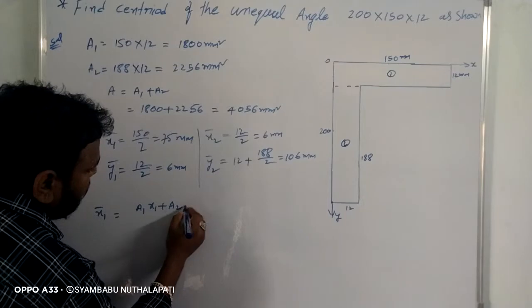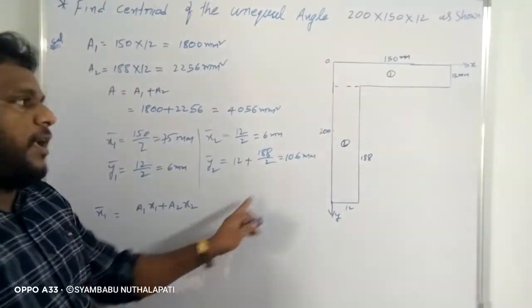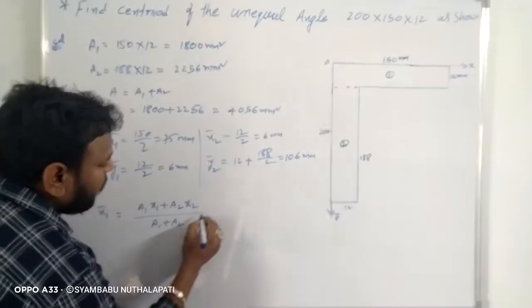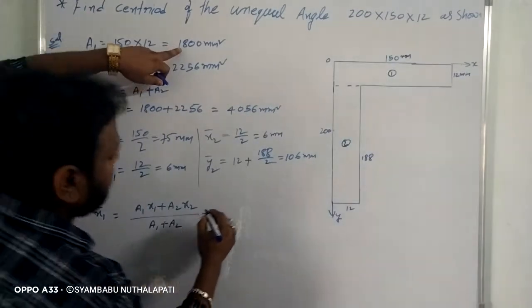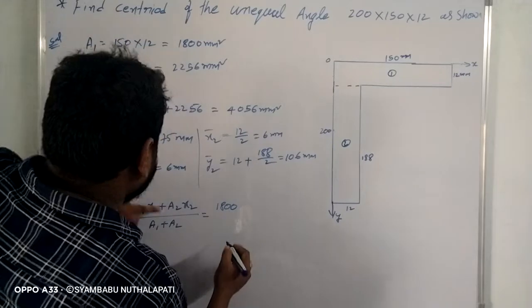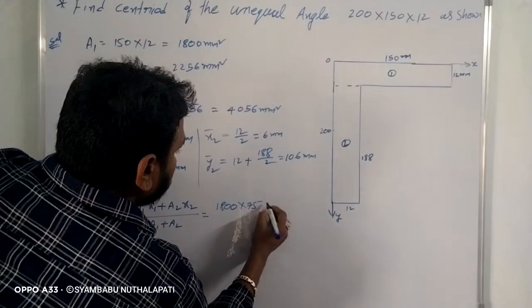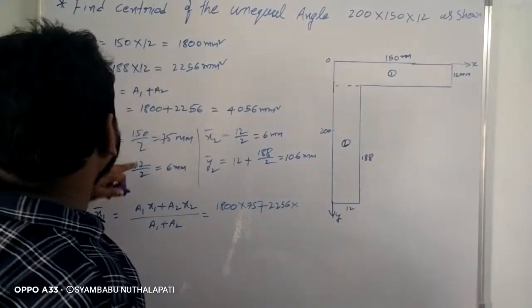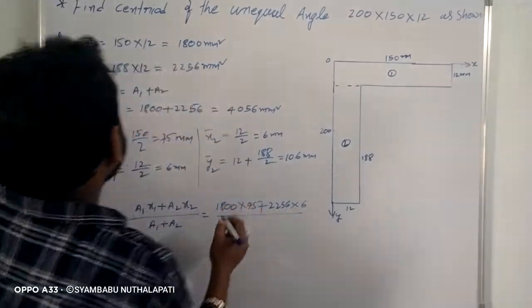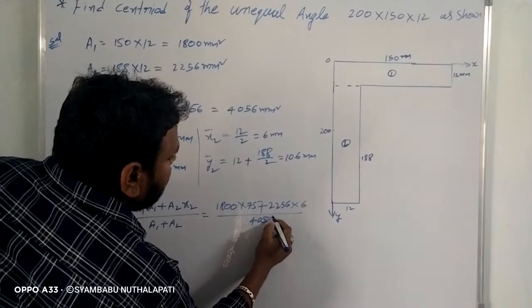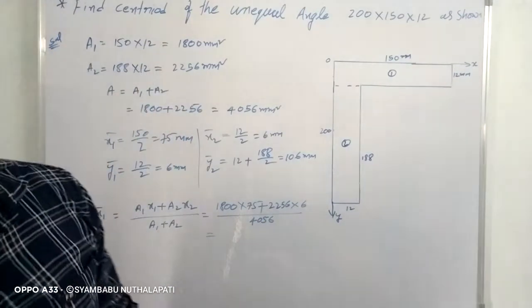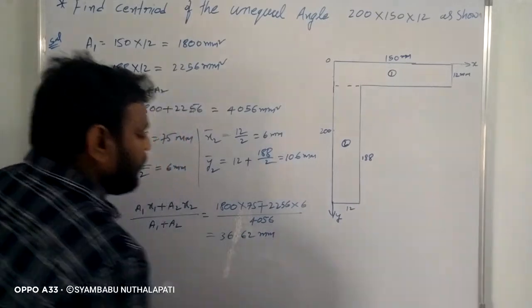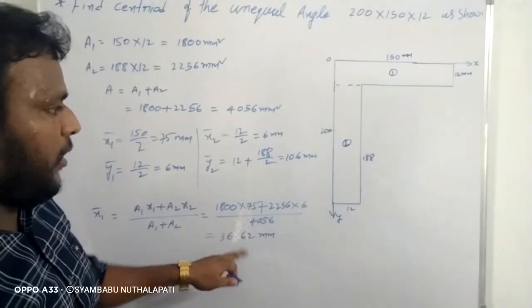x bar equals a1·x1 plus a2·x2, divided by a1 plus a2. Total area is 4056. A1 is 1800, x1 is 75; a2 is 2256, x2 is 6. Whole divided by total area 4056. So total x-distance x̄ is 36.62, approximately 36.62.